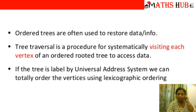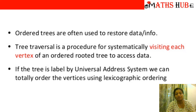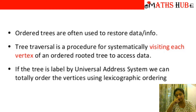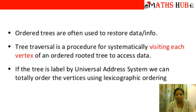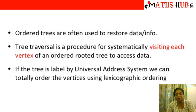Very often, ordered trees are used to store the data or information. In a tree traversal, it is a procedure of systematically visiting each vertex of an ordered rooted tree to access the data. If the tree is labeled by the universal address system, we can totally order the vertices using the lexicographic ordering.